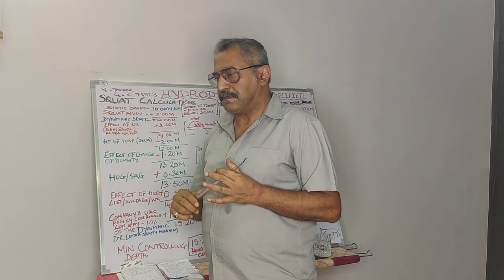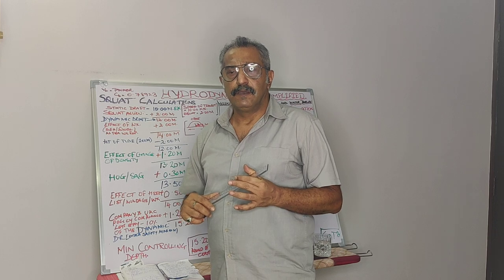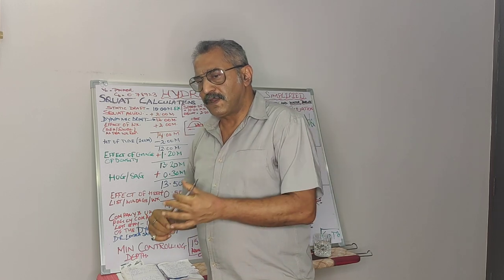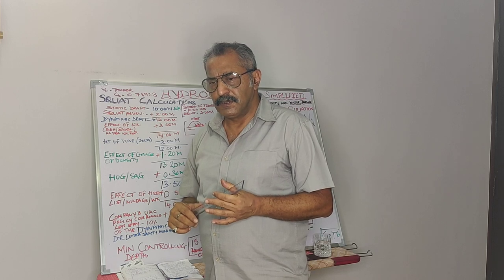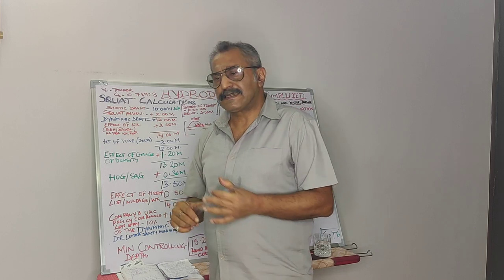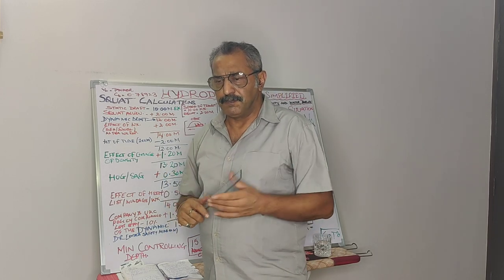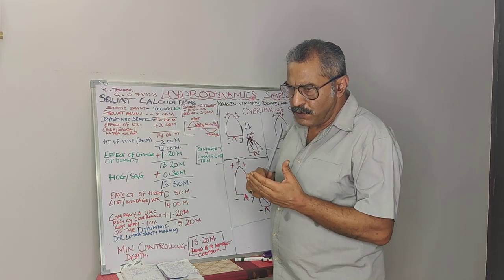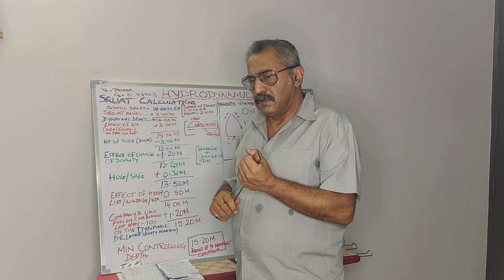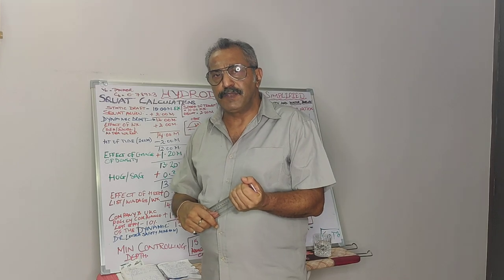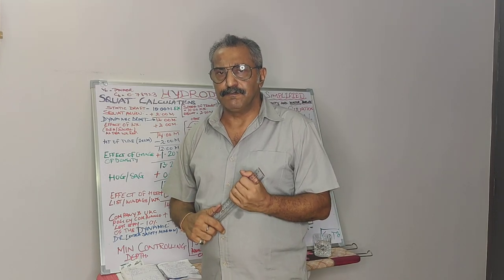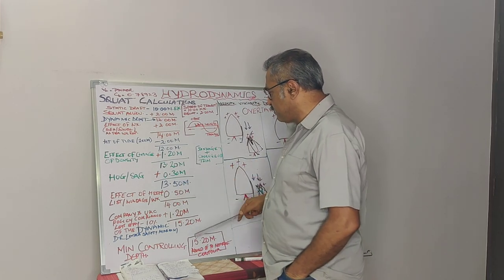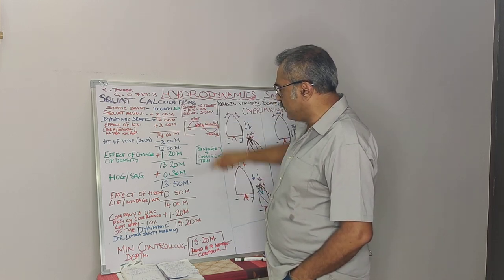The other thing to take into consideration is the company's UKC policy. In open sea, most companies have a UKC policy of 10% of the dynamic draft. During my audits and inspections I have come across some companies that take this as static draft, but later they accumulate everything into their UKC policy. Going in a systematic manner so we don't forget anything: when you take dynamic draft into account, add up all these factors plus 10% per the company's UKC policy, you get an additional safety margin. 10% of the dynamic draft in this case is 1.2 meters.